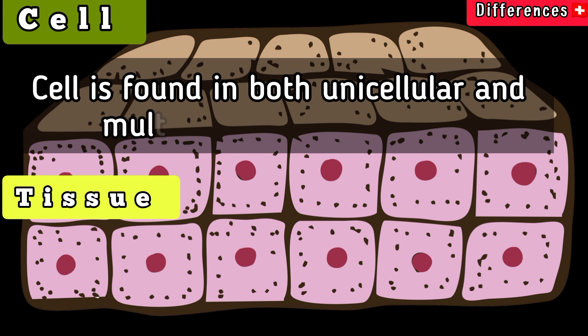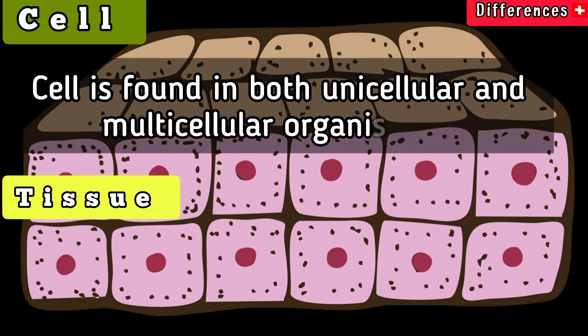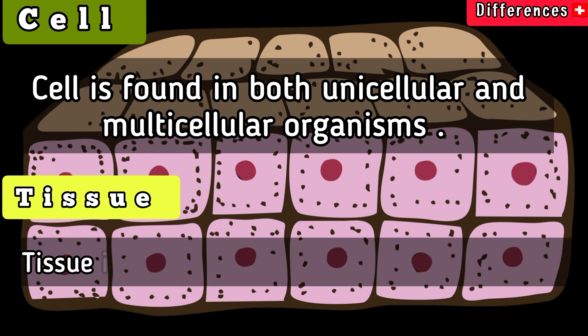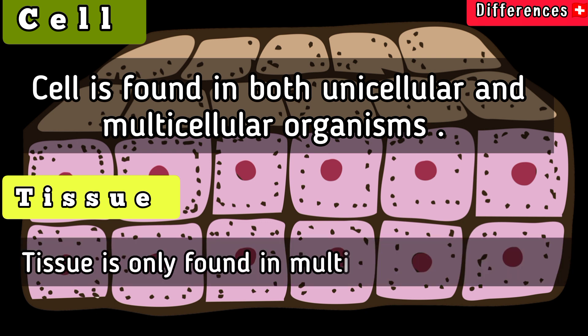A cell is found in both unicellular and multicellular organisms, whereas tissue is only found in multicellular organisms.